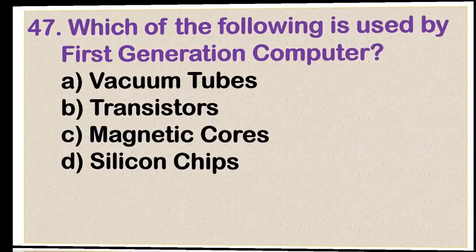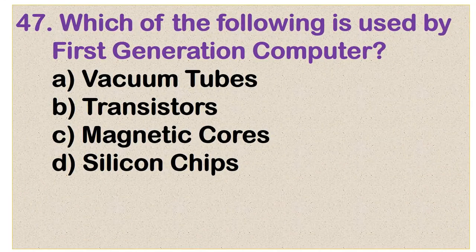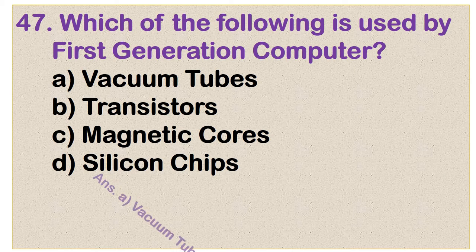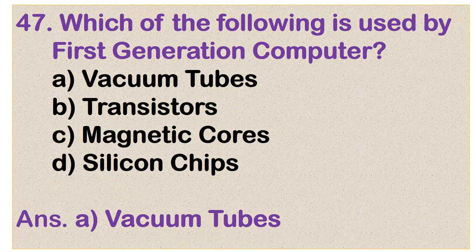Question number 47: Which of the following is used by first-generation computers? Options are vacuum tubes, transistors, magnetic cores, and silicon chips. Option A is the correct answer: vacuum tubes.